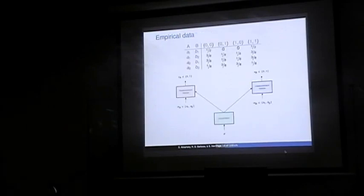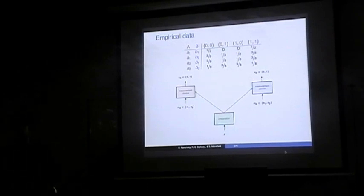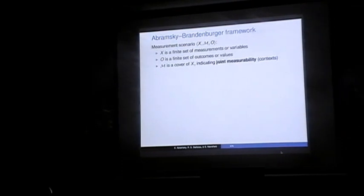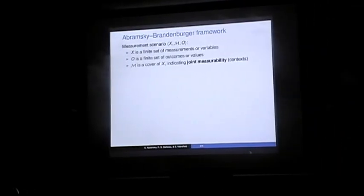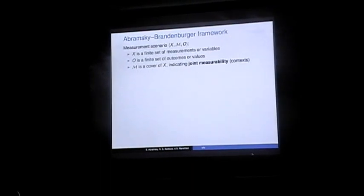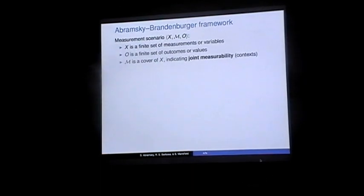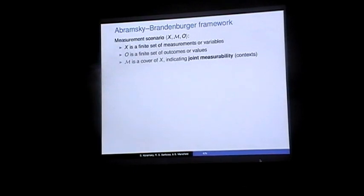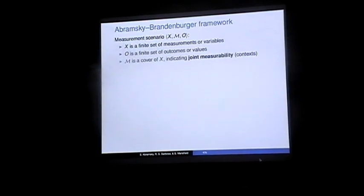This approach deals with a much larger class of scenarios, including contextuality scenarios. The general framework is as follows: a measurement scenario is a triple, where we have a finite set of measurements or variables, O is a finite set of outcomes or values for these variables — here it was 0 and 1 — and then we have a cover of X indicating which measurements can be made together. These are what we call the contexts.